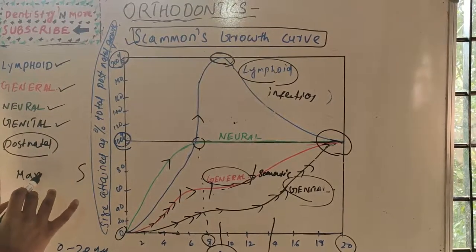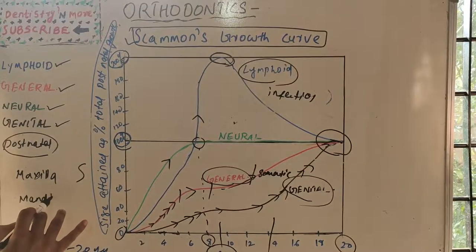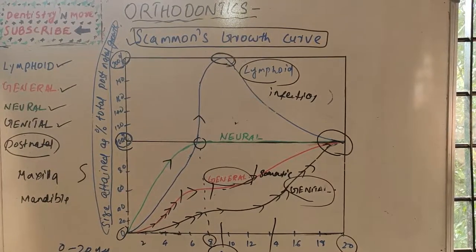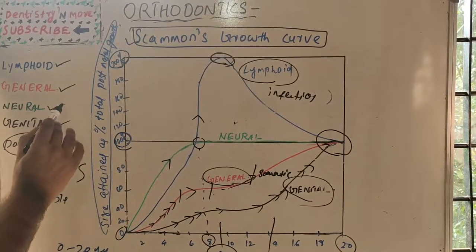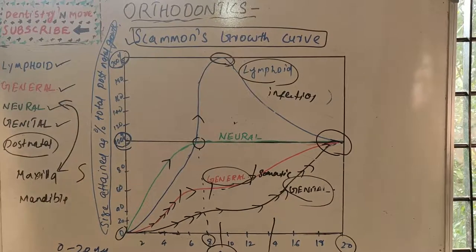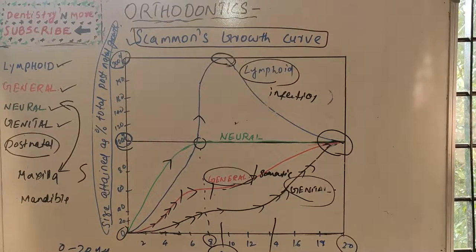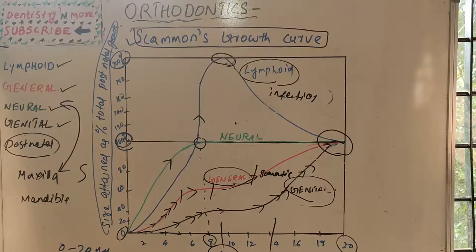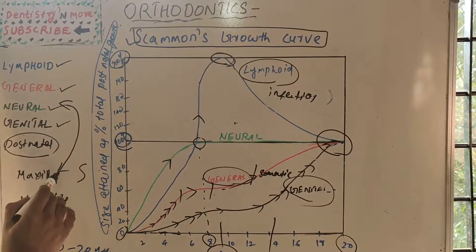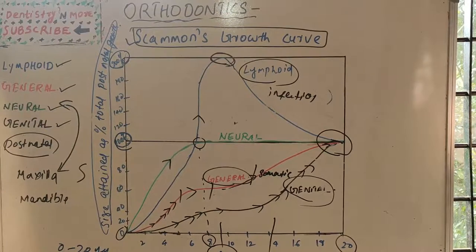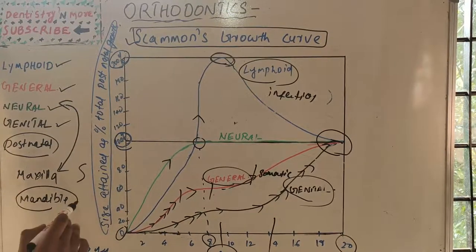Now let's relate the oral cavity to these tissues. The maxilla follows the neural curve — since the neural curve reaches adult size by eight years, the maxilla also reaches complete formation by around eight years. So if you are doing any treatment on the maxilla, such as a face mask, it should be given as early as possible — around six or seven years — to promote maxillary growth, as the maxilla formation will be complete by eight years.